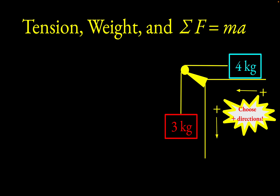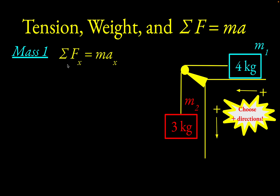Next, we're going to look at each object by itself — mass one first, which is the four kilogram mass, and then mass two, which is the three kilogram mass. Looking at mass one, all the motion is horizontal, so I'm going to use F equals MA in the horizontal direction. The horizontal force is going to be the tension from this rope. Ropes can only pull, so where the rope attaches to the four kilogram mass, it just pulls to the left. The only horizontal force acting on the four kilogram mass is that tension.